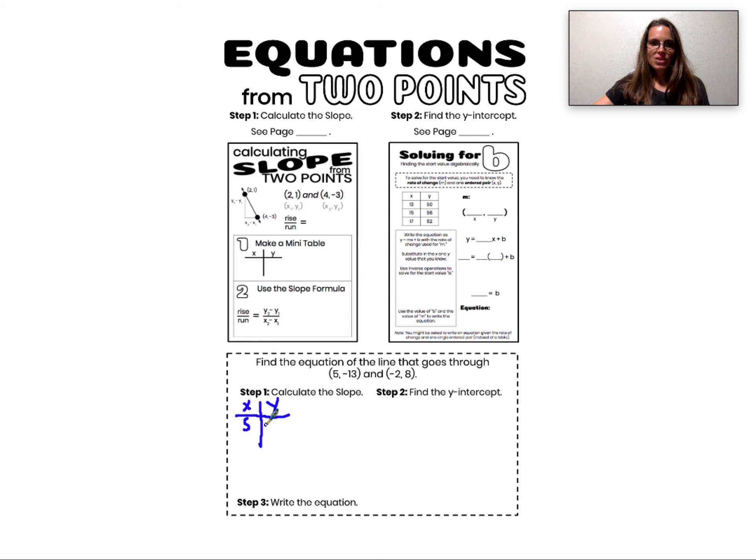So I'm going to make a table which only includes those two ordered pairs, (5, -13) and (-2, 8). To find the slope, I need to find the change in y and divide it by the change in x.